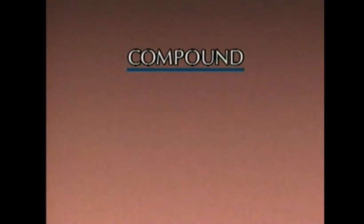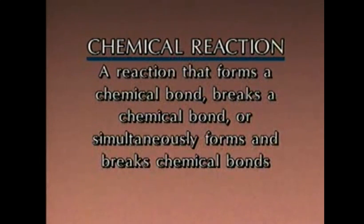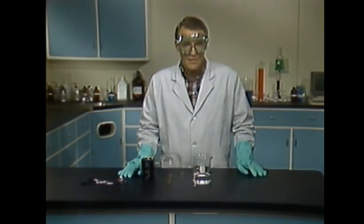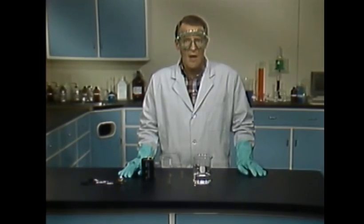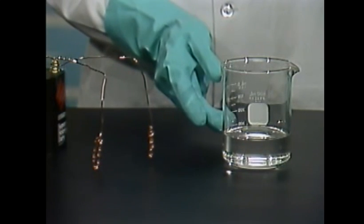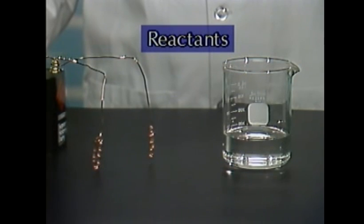A compound is a product of a chemical reaction. It's formed when two or more elements are combined or bonded chemically. A chemical reaction is a reaction that forms a chemical bond, breaks a chemical bond, or simultaneously forms and breaks chemical bonds. Let's look at a chemical reaction to understand compounds better. We'll start with the element copper in the form of these two copper wires, and the compound sulfuric acid. These materials can also be called reactants because they will react together.